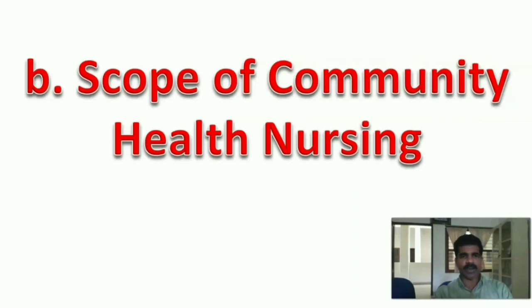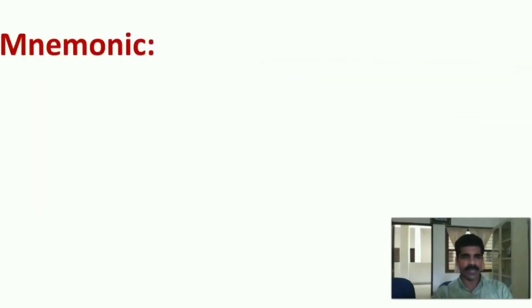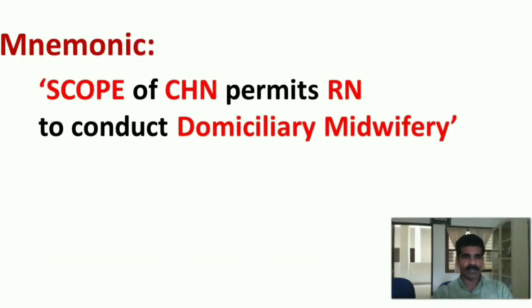The second topic is scope of community health nursing. The mnemonic made for this is: 'SCOPE CHN REGISTERED NURSE DOMICILIARY MIDWIFERY,' which represents scope of community health nurse permits registered nurse to conduct domiciliary midwifery.